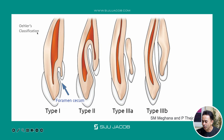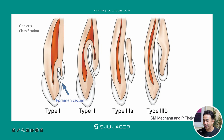When you look at Oler's classification of dense invaginators cases, you can divide it into type 1, 2, and 3. Type 3 can be further divided into type 3a and type 3b. Type 1 is a partial invagination where the lesion does not extend past the cemento-enamel junction, so it's restricted to the coronal part and doesn't extend into the cementum.